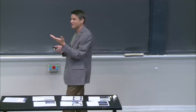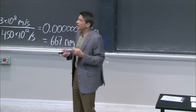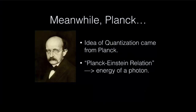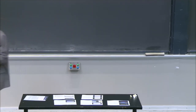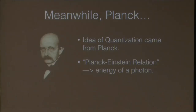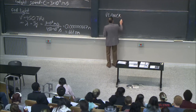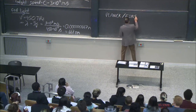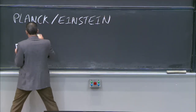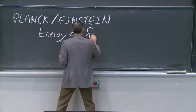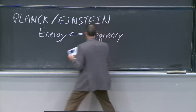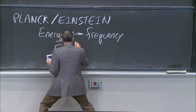Planck's contribution was really that he was one of the first deep thinkers to talk about quantization, and it was quantization of light. This is called the Planck-Einstein relation. What they said is that the energy for light is related to the frequency through a constant. In particular, E equals h times the frequency. This was revolutionary — it might just look like a simple relationship.